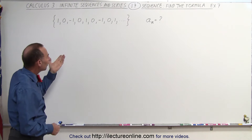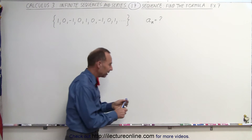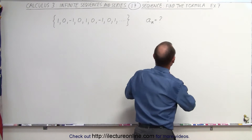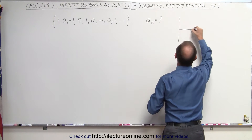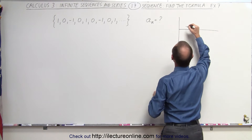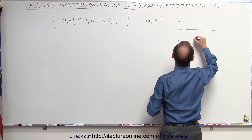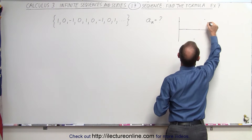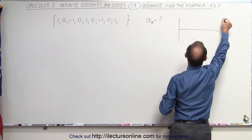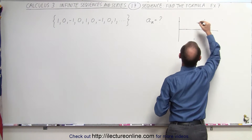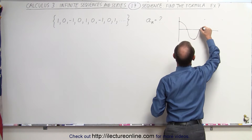And when you look at those numbers and you graph them out, they kind of look like this. Let's graph the first one out. So we start with 1, 0, negative 1, 0, 1, 0, negative 1, 0, 1, and so forth.